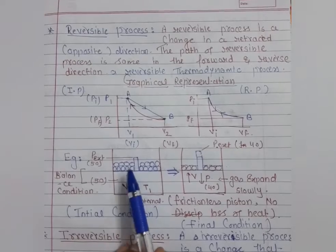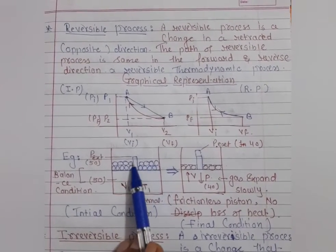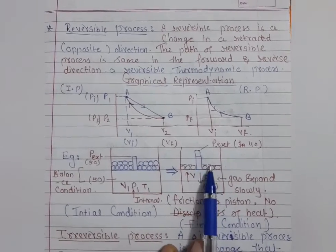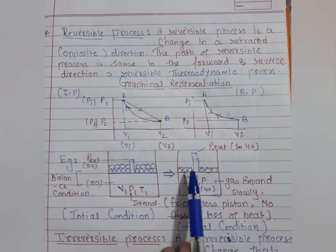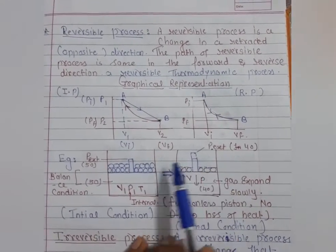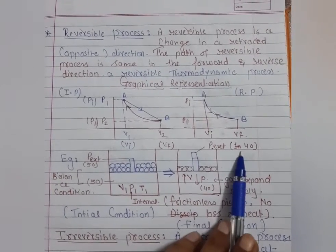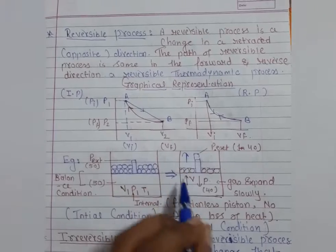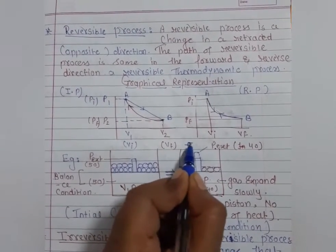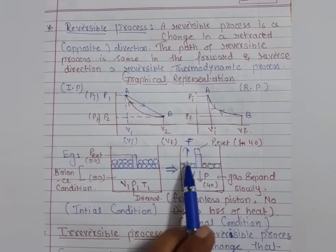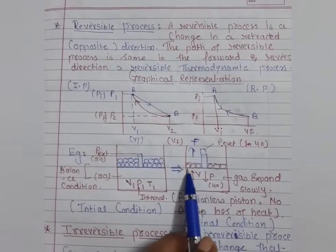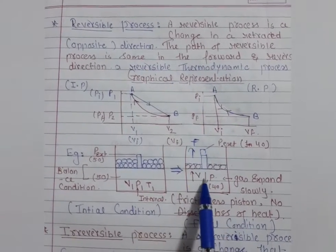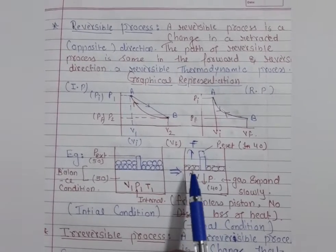Then, if we remove some amount of weight from the piston — say pressure goes from 50 to 40 — the piston moves in the upward direction. The force and displacement both go upward, the molecules expand, and inside the gas the pressure decreases while the volume expands.